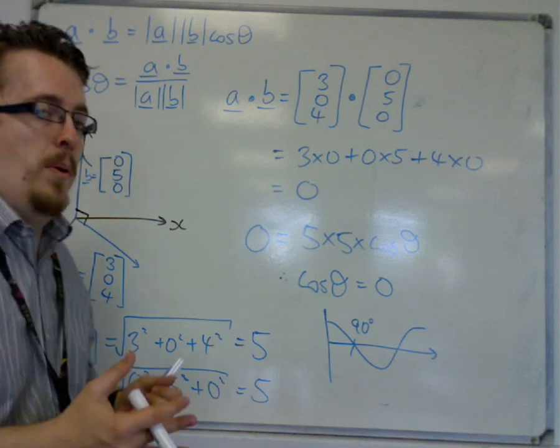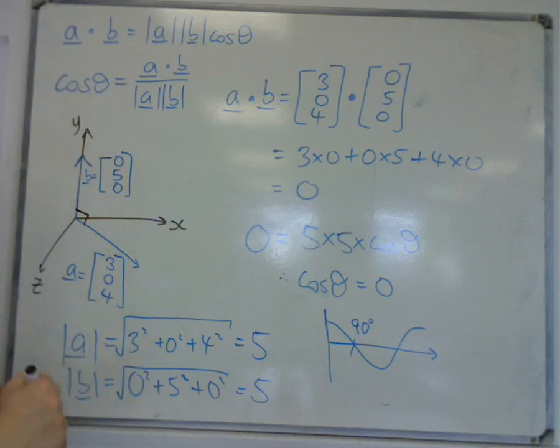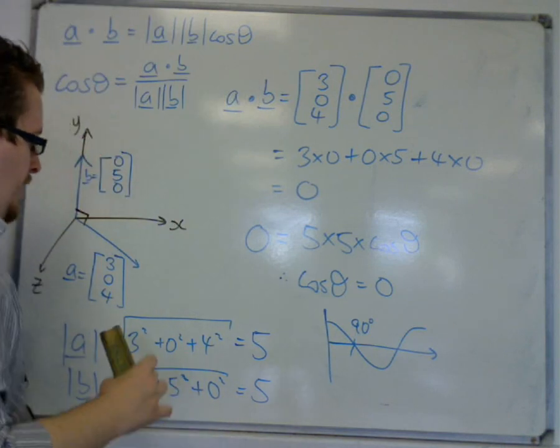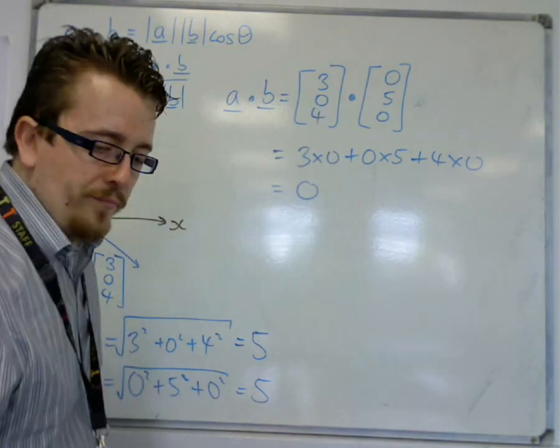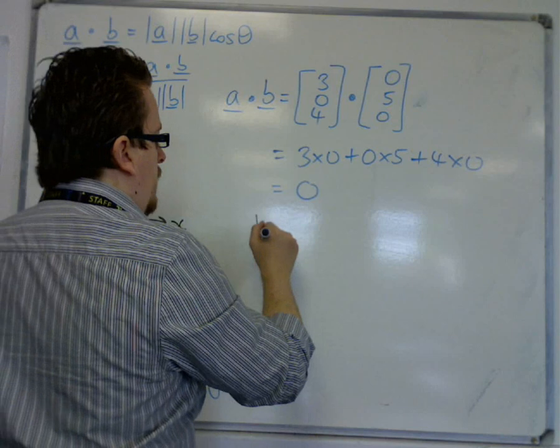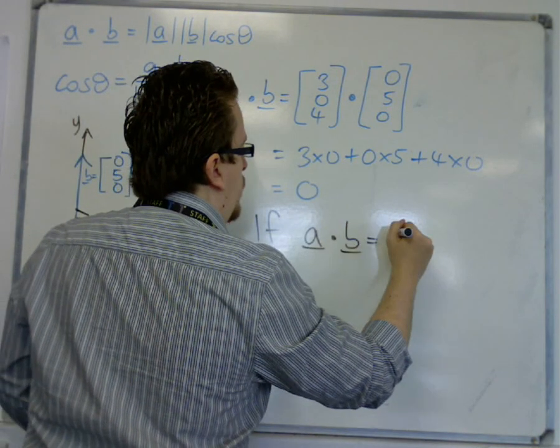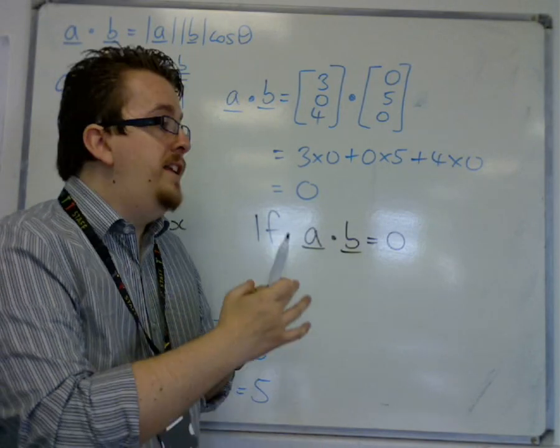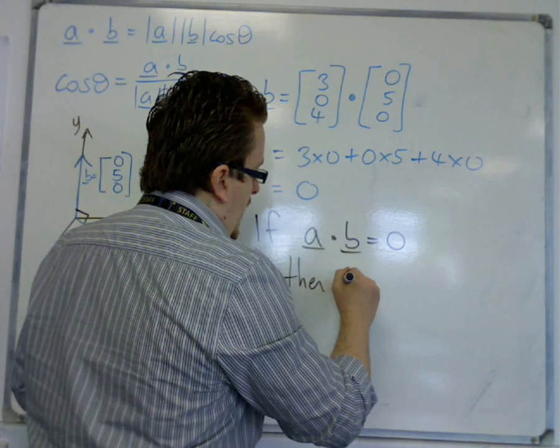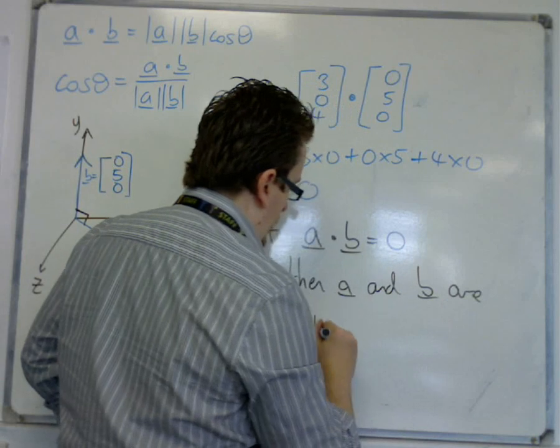So they are going to be perpendicular. So this is a consequence from the scalar product, so that we can say in general, if a dot b is equal to 0, so if you do the scalar product and you get 0, then a and b are perpendicular.